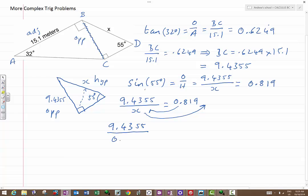And we find out that x is equal to 9.4355 divided by the 0.819. And using a calculator, this tells us the final answer, 11.52 meters. And we know it's probably correct, because we know that x is the hypotenuse, and that is longer than any other side, and the side we found earlier was 9.4. So this indeed does feel correct.